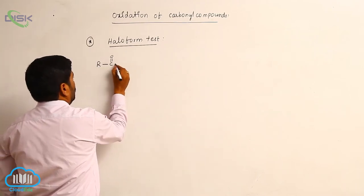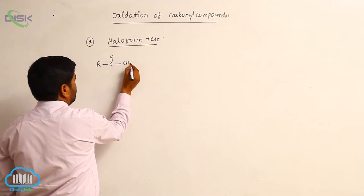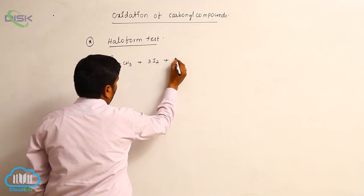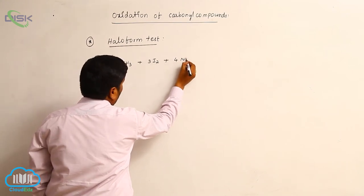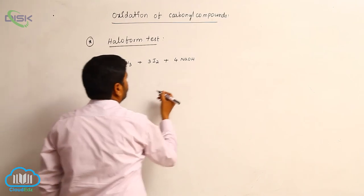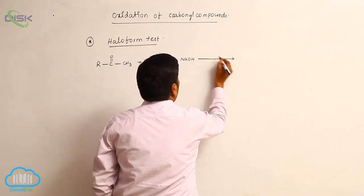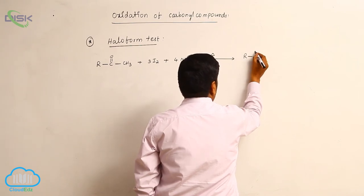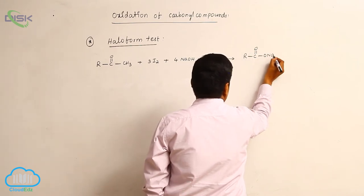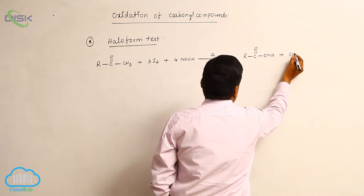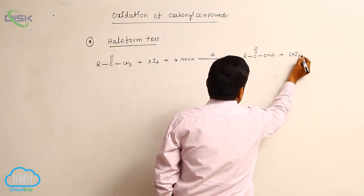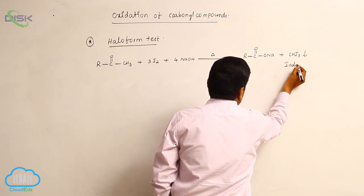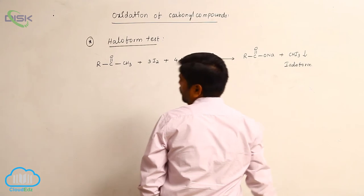The overall equation is: R-CO-CH₃ + 3 mol I₂ + 4 mol NaOH → R-COO⁻Na⁺ + CHI₃. CHI₃ is known as iodoform.